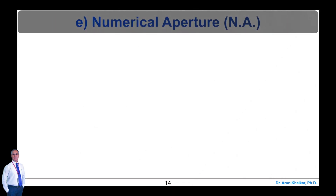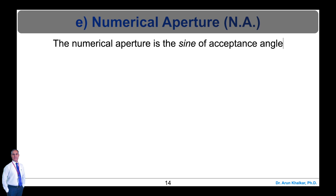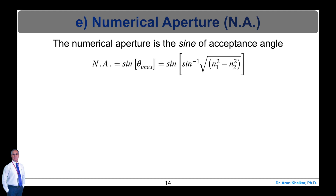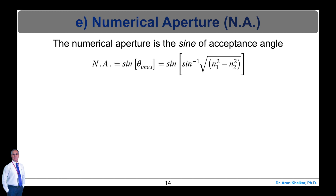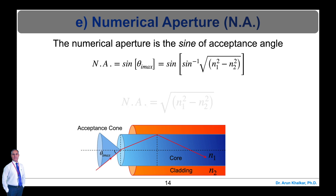The next important parameter of Optic Fibre is the numerical aperture, abbreviated as NA. The numerical aperture is the sine of the acceptance angle. NA = sin(theta_i_max) = sin(sin⁻¹(√(N1² − N2²))). After simplification, the numerical aperture is equal to √(N1² − N2²).